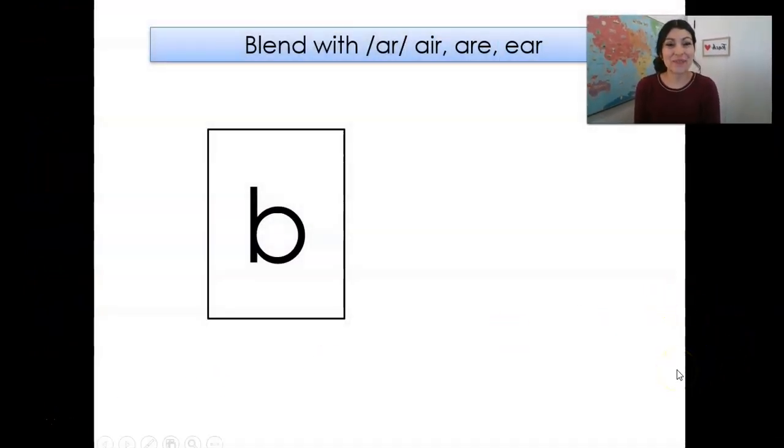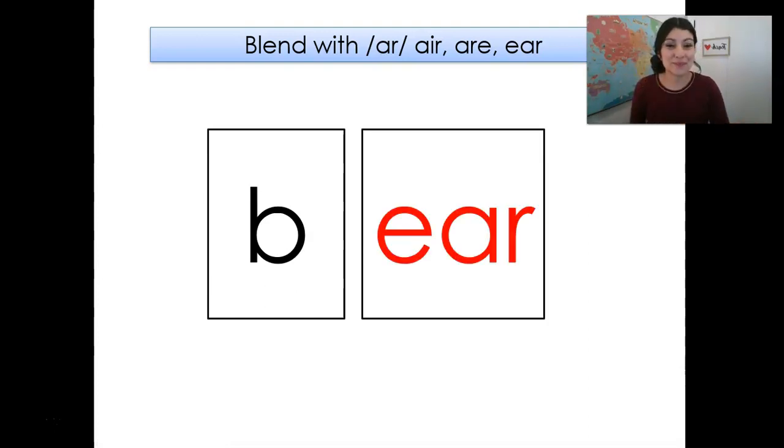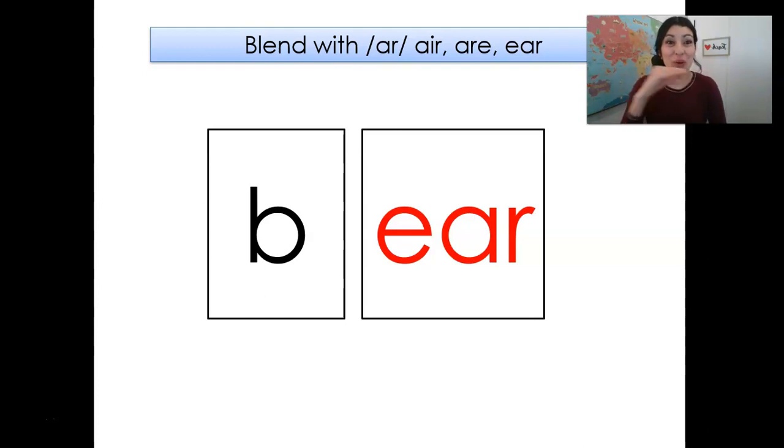So we're blending sounds. Ready? The sound is B, sound air, hold, bear. Now what kind of bear is this? The animal, very good.